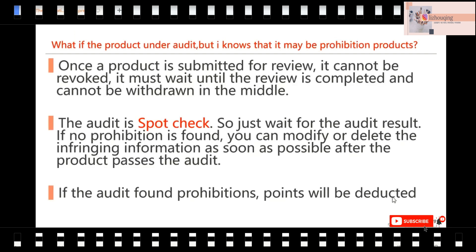What about a product that is under audit but you realize it might be a prohibited product? That means you posted a listing and it is under checking by the AliExpress platform. Here are three rules. Once a product is submitted for review, it cannot be revoked — it cannot be deleted. It must go through until the review is completed and cannot be withdrawn in the middle.